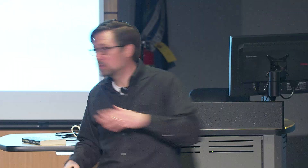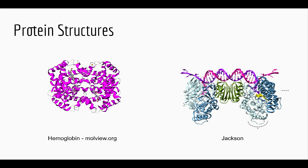Here's a couple protein structures. You know they're cartoons of those alpha helices and those beta sheets. This is hemoglobin. This is a beautiful complex between a protein and a piece of DNA — you can see the characteristic double helix right across the top, and then the protein over it. I'll come back to both of these structures.